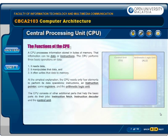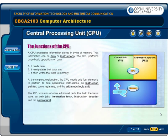A CPU processes information stored in bytes of memory. That information can be data or instructions. The CPU performs three basic operations on data: it reads data, it manipulates that data, and it often writes that data to memory. At the simplest explanation, the CPU needs only four elements to perform its data operations.